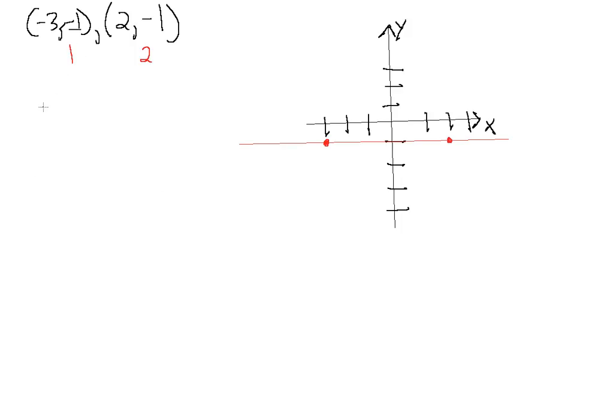So we have minus one minus a minus one, being careful with our negative signs here, and we have minus three minus two. This gives us zero in the numerator and minus five in the denominator. This actually ends up being zero.